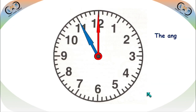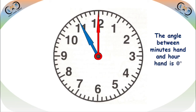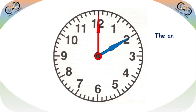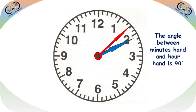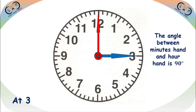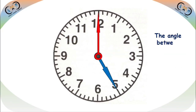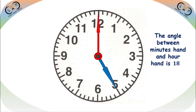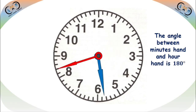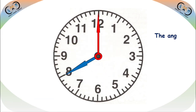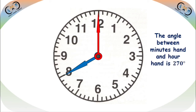Let's see some special cases. The angle between the minute hand and hour hand is 0 degrees at 12 o'clock, 90 degrees at 3 o'clock, 180 degrees at 6 o'clock, and 270 degrees at 9 o'clock.